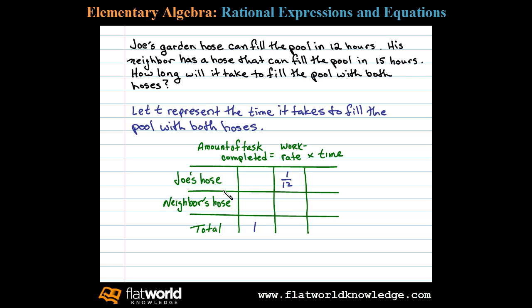Therefore Joe's hose has a work rate of 1 over 12. In other words it can do 1 twelfth of the job in one hour.